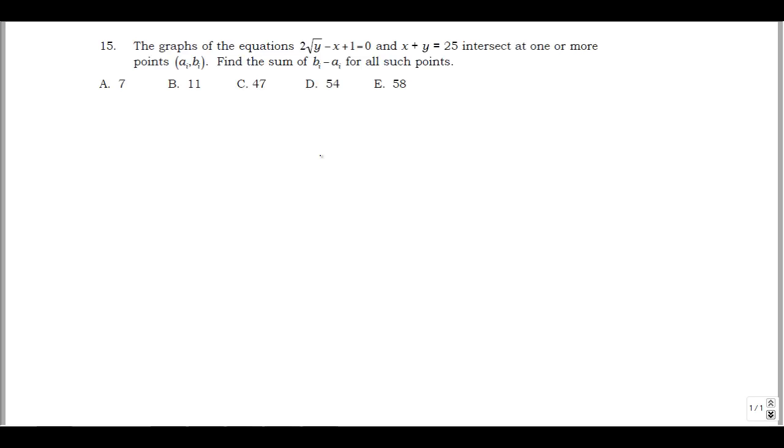Now this is going to end up being relatively straightforward really. The one thing is there's one little catch that I think maybe they're trying to catch you on here, one little common mistake. Let's just start writing our equations. 2√y - x + 1 = 0 and x + y = 25.